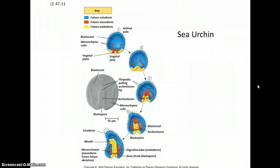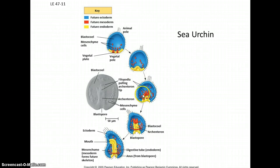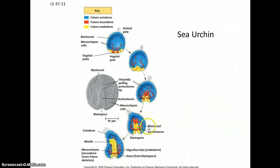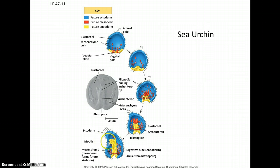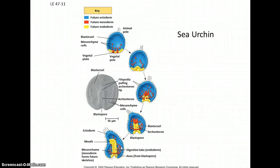Embryo development has been studied extensively in sea urchins. At the blastula stage, we have the hollow ball with the interior known as the blastocoel. Cells begin to migrate into the blastocoel — this is gastrulation — and you're forming the different germ layers: the ectoderm, which becomes the outer layer; the endoderm (yellow); and the mesoderm (red). Through gastrulation you can see developing the openings of the organism, the mouth and the back end, the digestive tract, and other internal organs.